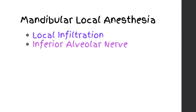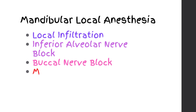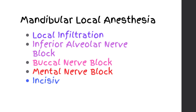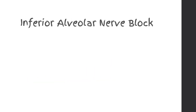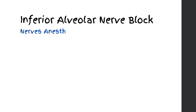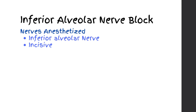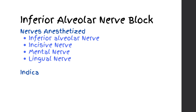Mandibular local anesthesia includes: local infiltration, inferior alveolar nerve block, buccal nerve block, mental nerve block, and incisive nerve block. Inferior Alveolar Nerve Block — nerves anesthetized: inferior alveolar nerve, incisive nerve, mental nerve, and lingual nerve.